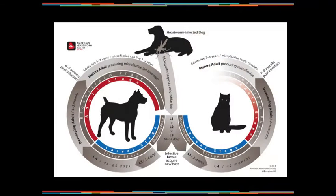When we talk about heartworm disease in the cat and diagnosing the disease, one of the things we have to do is go back to the life cycle and understand where we see symptomatic disease in the cat. We have to recognize that we see symptomatic disease at two stages: one in the pre-adult stage, where they get primarily respiratory symptomatology, often associated with heartworm-associated respiratory disease, and then they can also be symptomatic when they have an adult infection.